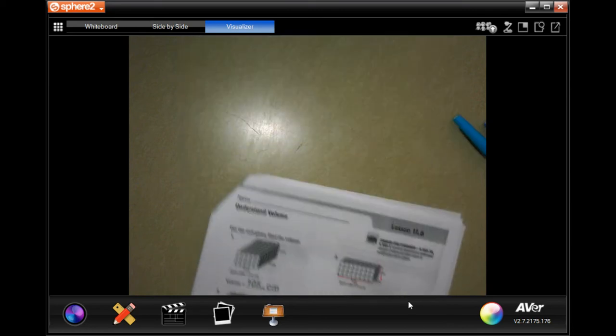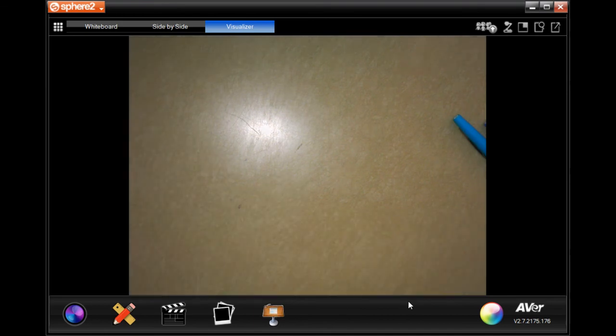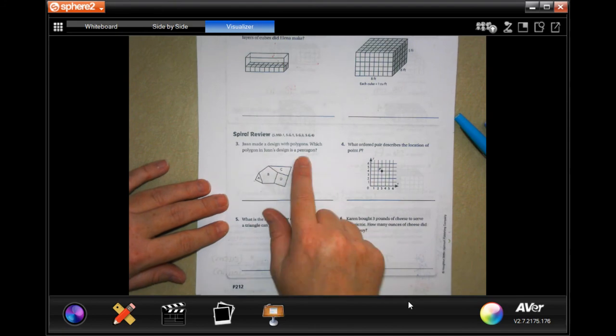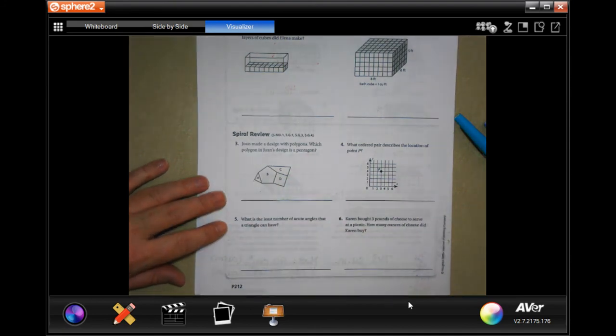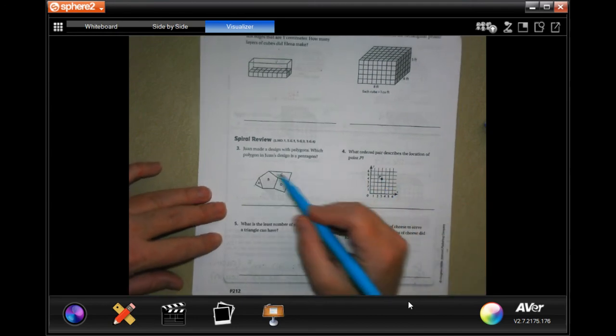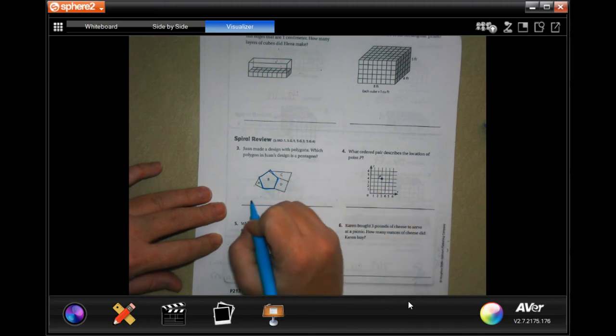We're going to go down and do Spiral Review. It says, Juan made a design with polygons. Which polygon in Juan's design is a pentagon? Well, a pentagon has 5 sides. This one has 1, 2, 3, 4; this one has 1, 2, 3, 4; this one has 1, 2, 3. It looks like B is the only one that has 5 sides.